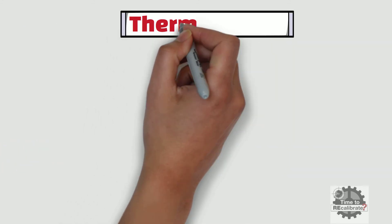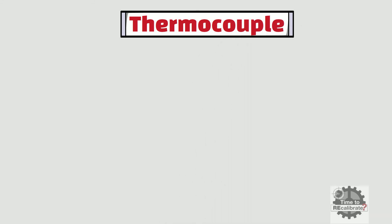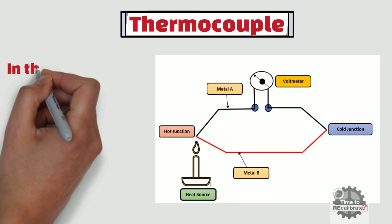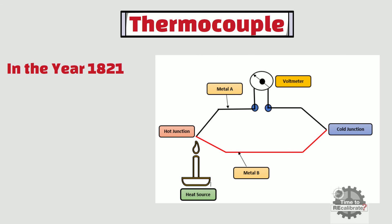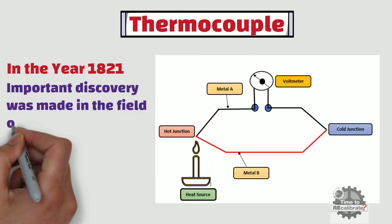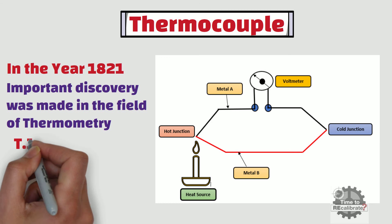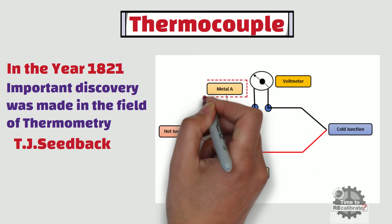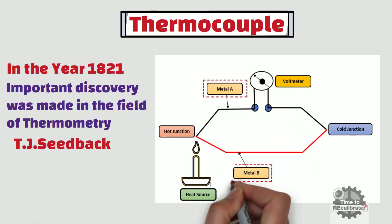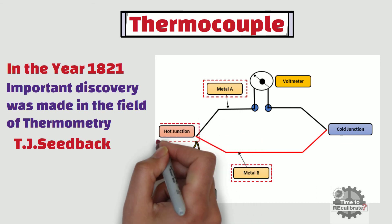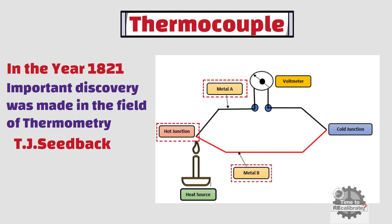Let's learn about thermocouple and its operating principle. In the year 1821, a very important discovery in the field of thermometry was made. T.J. Seebeck observed that if two dissimilar metals are joined together to form a closed loop, and if one junction is kept at a different temperature from the other, an electromotive force is generated and an electric current will flow in the closed loop.